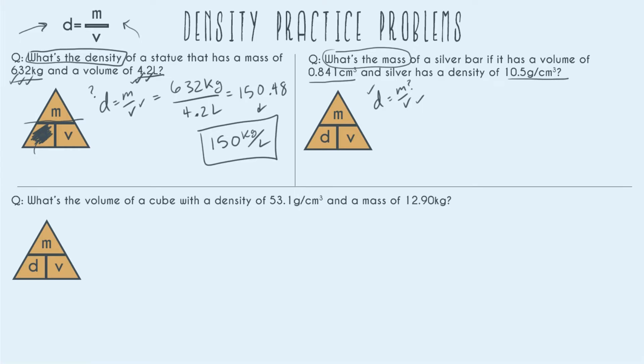So rearranging so that D looks like a fraction, we have D over 1 equals M over V and now to go ahead and get rid of V we can multiply by V over 1 on both sides. Now we can cancel out V and we're left with V times D equals mass.